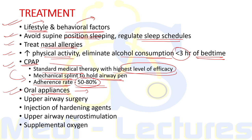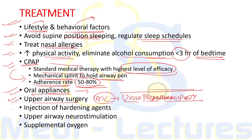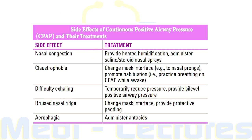Oral appliances that advance the mandible and reposition the lower jaw can be used. Upper airway surgery — most commonly uvulopalatopharyngoplasty — is another option. Injectable agents to harden the soft palate, radiofrequency ablation, palatal implants, and upper airway neurostimulation are additional approaches. Supplemental oxygen can increase oxygen saturation during nighttime.